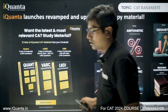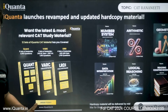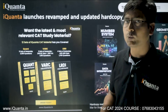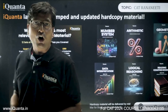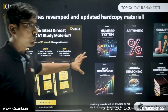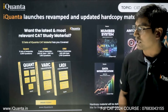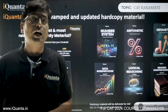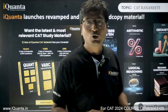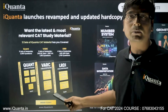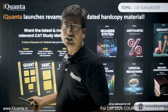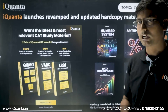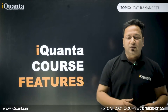We have also launched the best CAT books in the market — a set of 12 books, completely revamped to CAT 23 level with all new content, covering all the respective sections. These are the most updated materials available right now, replacing outdated 20-year-old resources. If you order today, delivery is expected by mid-March.